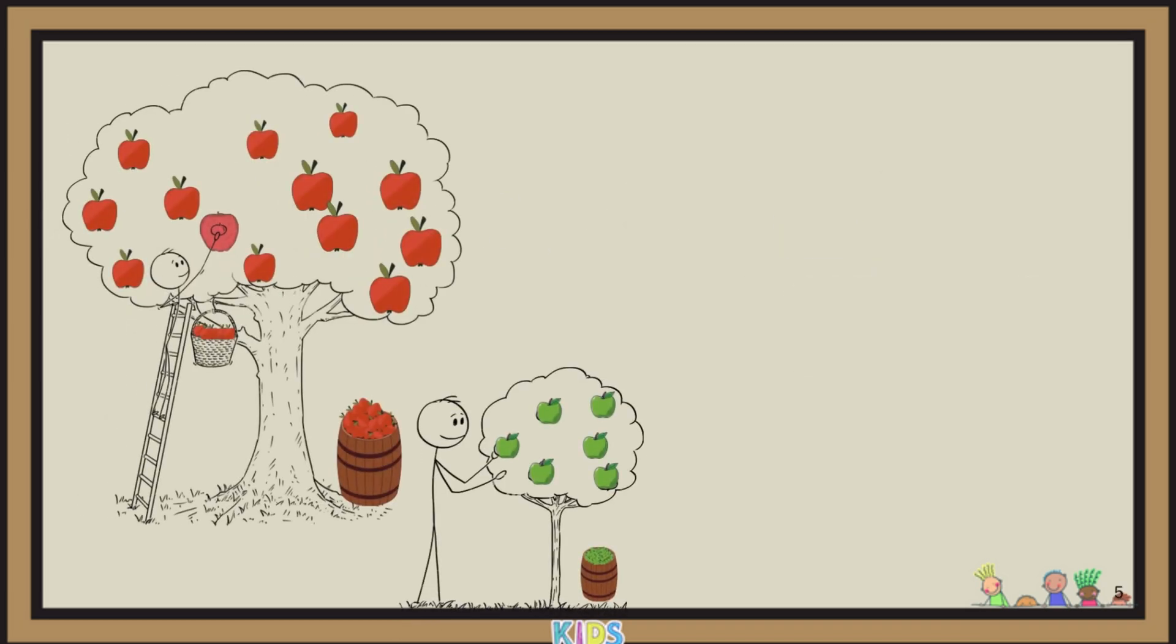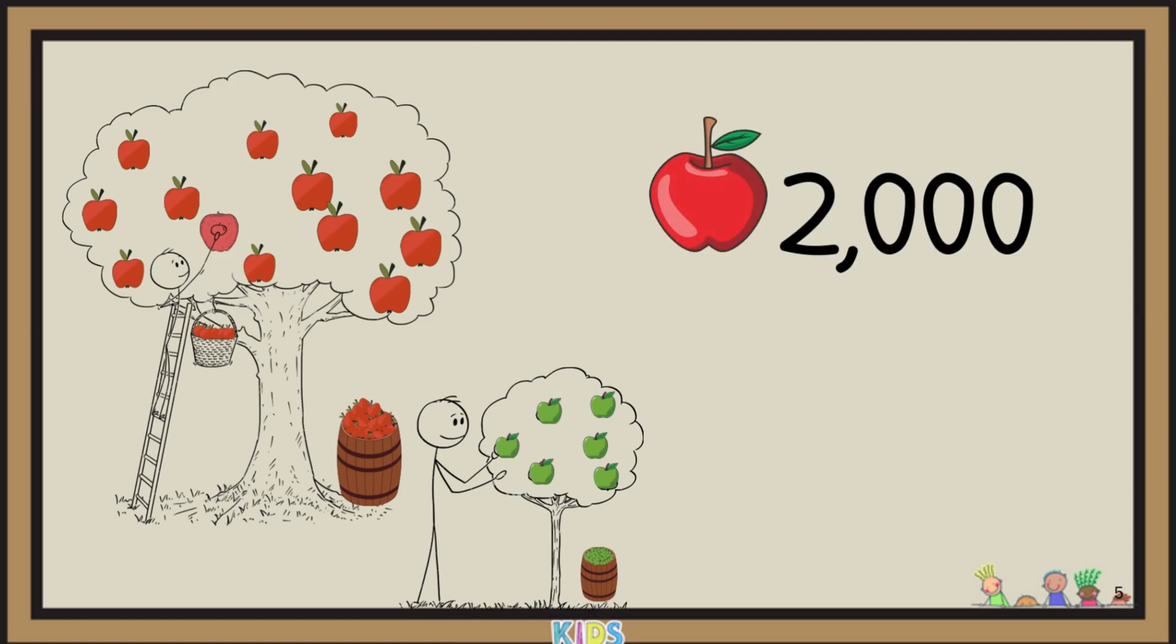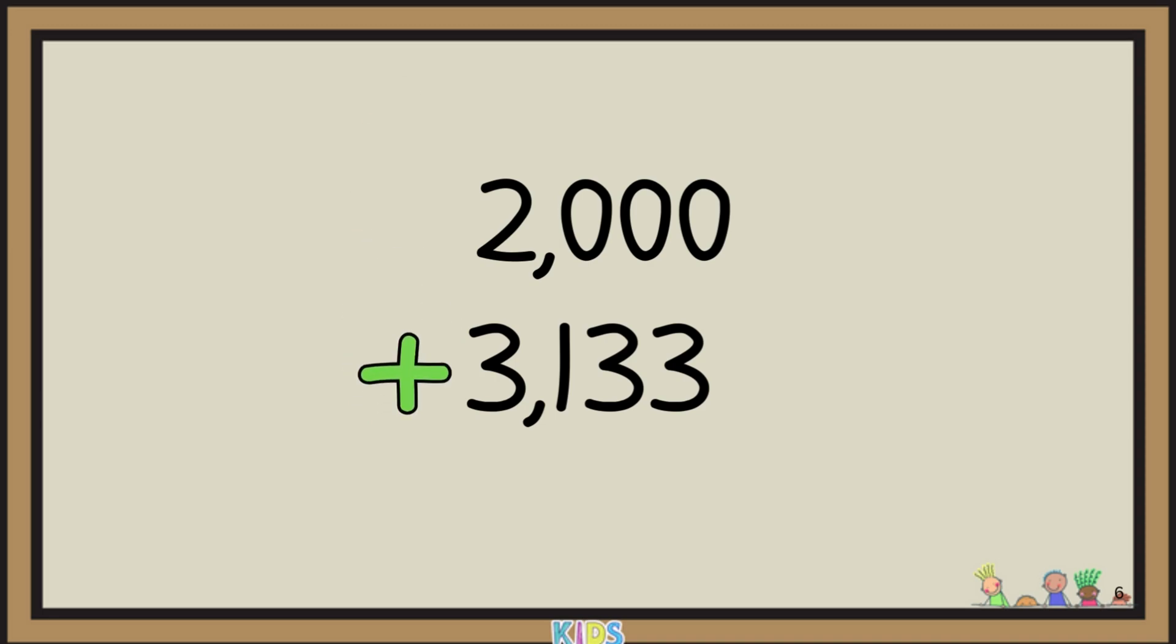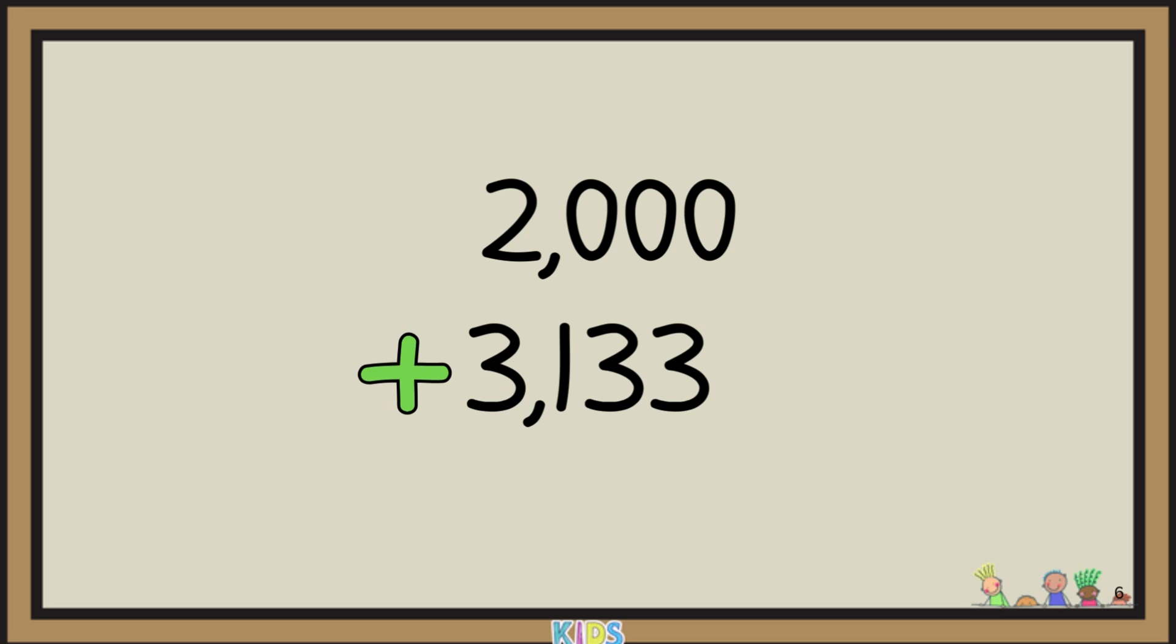Let's say a farmer harvested some apples. He picked 2,000 red apples and 3,133 green apples. He wants to find the total number of apples he picked this year. To solve that, we use addition. We stack the numbers like this, 2,000 on top and 3,133 below it.